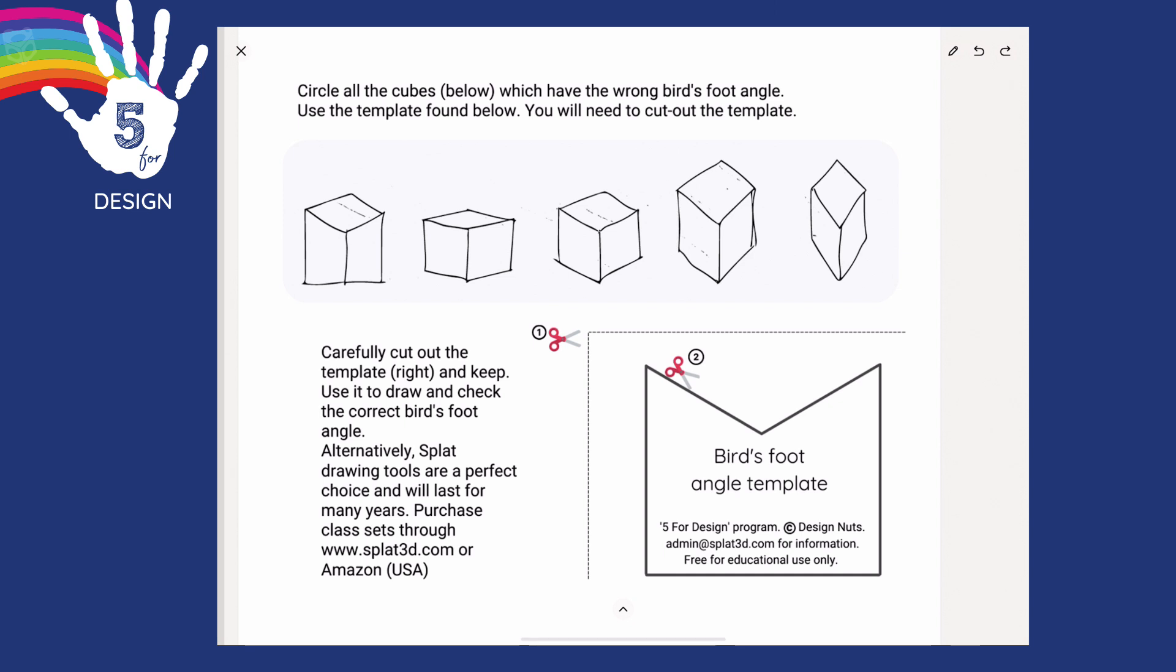Great, good job. Let's place the template underneath this one and we will see that this line and this edge do not meet up at all, so that one is totally the wrong angle. Let's circle that one. I'd like you to work your way along now, checking all of these other cubes and circle the ones that do not look correct or do not line up to this bird's foot angle. Good luck. That's it for today, guys. I will see you for day three. Bye now.